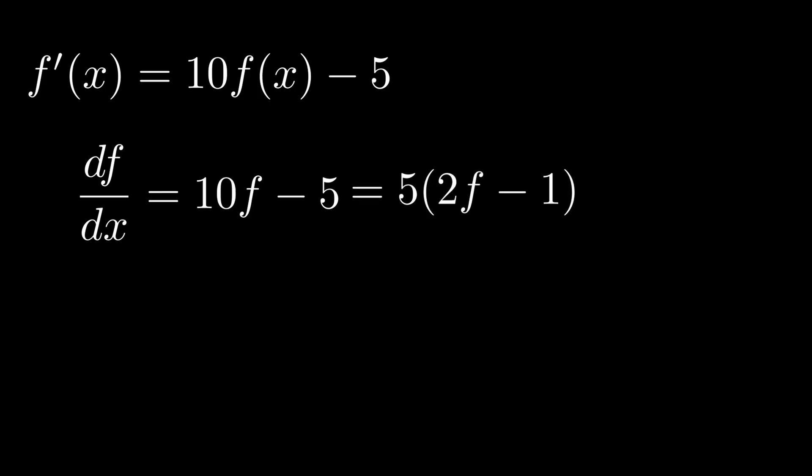Now what we want to do is multiply both sides by dx divided by 2f minus 1. The reason for this is that on one side we're just going to have f's and on one side we're just going to have x's. And that will enable us to apply the separation of variables technique which we're going to use to solve this problem.